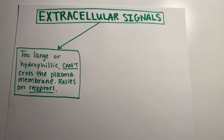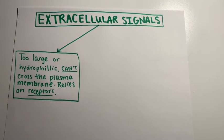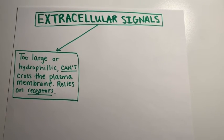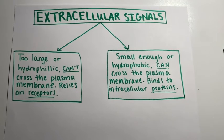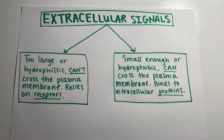There are two types of extracellular signals. One type is too large or hydrophilic and they can't cross the plasma membrane. They rely on receptors on the surface of the cell. The second class consists of signals that are small enough or hydrophobic. They can cross the plasma membrane and they bind to intracellular proteins.